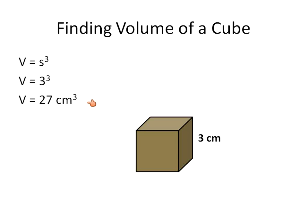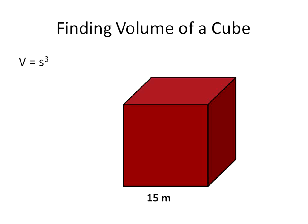We also have to remember that when we're working with centimeters, this would be cubic centimeters, written as centimeters to the power of three. So this is 27 cubic centimeters inside of this cube. Let's look at one with meters. Volume equals side to the power of three. This one here is 15 meters, so 15 to the power of three gives us 3,375 cubic meters. That would be how many little cubes fit inside the volume of this entire larger cube.